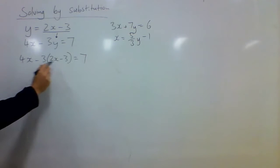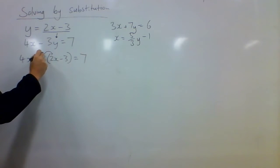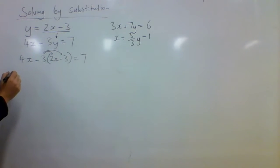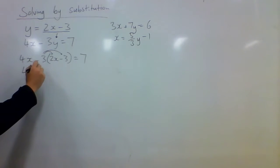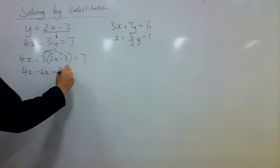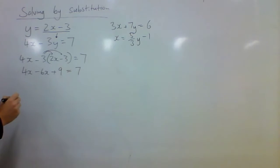The next step I'd have to do is to expand these brackets here. So I know I need to multiply that 3 by the 2x and I need to multiply the 3 by the negative 3. Don't forget to do that because that's where people often go wrong here. 4x is still there. Negative 3 times 2x is negative 6x. Negative 3 times negative 3 is positive 9. And that's equal to 7 still.